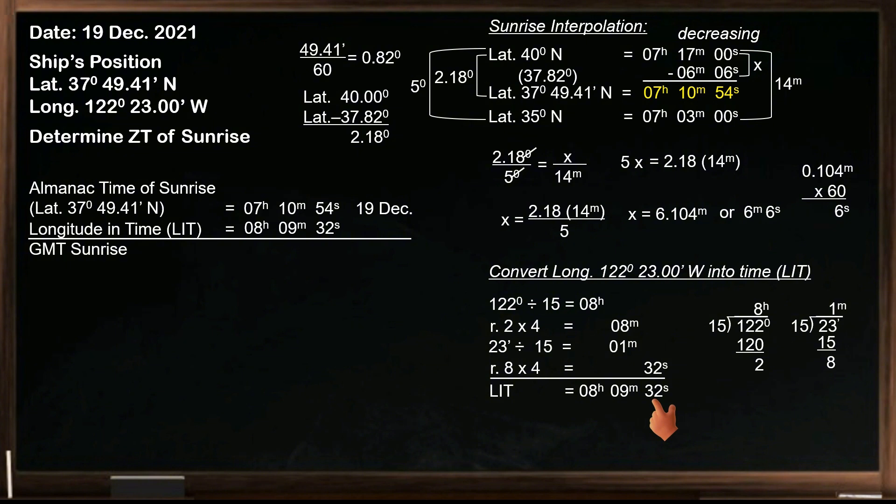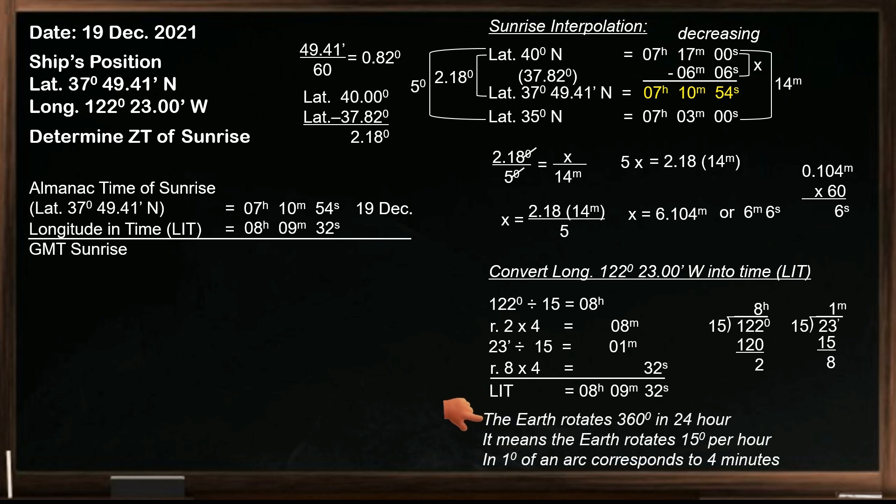Why do we need to divide it by 15, and the remainder is multiplied by 4? The earth rotates 360 degrees in 24 hours. This means the earth rotates 15 degrees per hour, and in 1 degree of an arc, it corresponds to 4 minutes. When you apply longitude in time, subtract easterly longitude and add westerly longitude. Our longitude is west, so we will add.